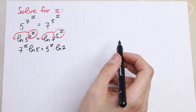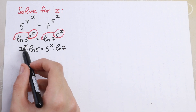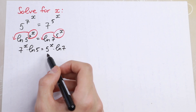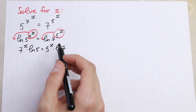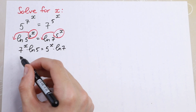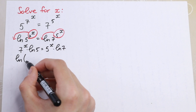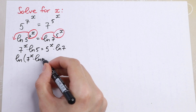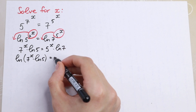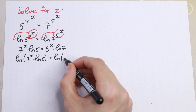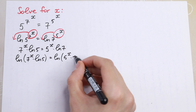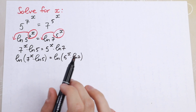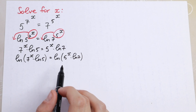What are we going to do next? We still have a problematic position of the power. So we need to take natural log once more from both sides. Natural log of 7 to the power x times natural log 5, equal to natural log of 5 to the power x times natural log 7.